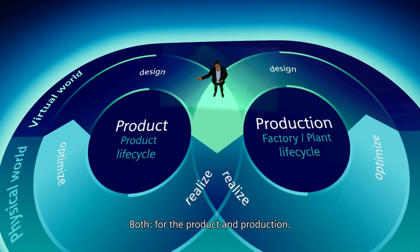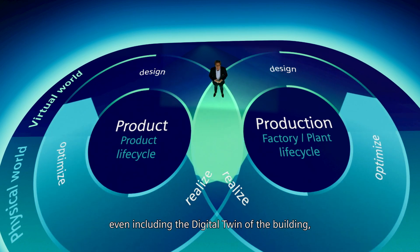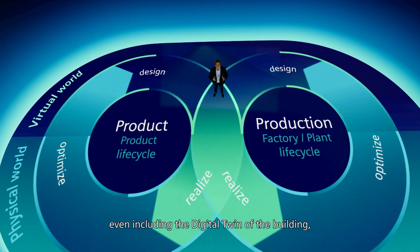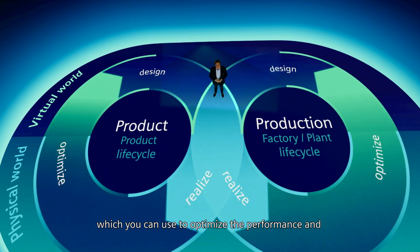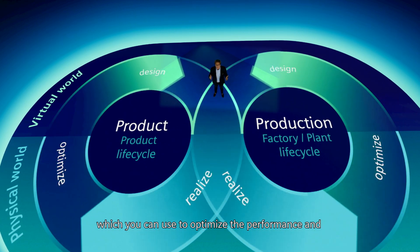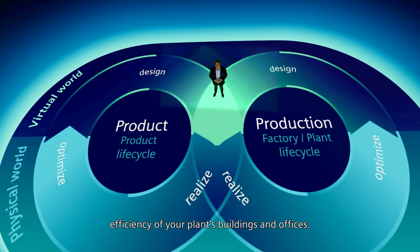The data generated — or the performance as we call it — enables a continuous loop of optimization both for the product and production. This comprehensive digital twin approach integrates all necessary domains, even including the digital twin of the building, which you can use to optimize the performance and efficiency of your plants, buildings and offices.